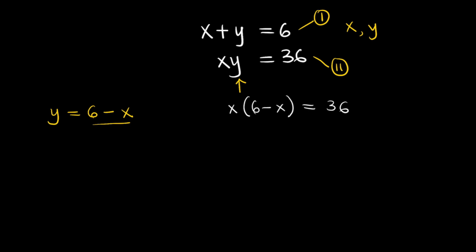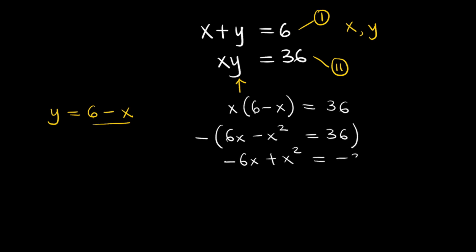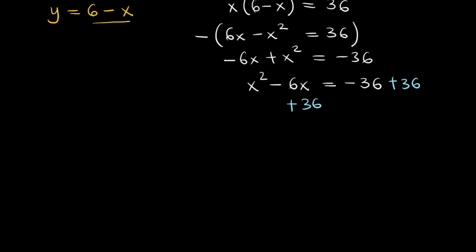I'll go ahead and open up this bracket. This is 6x minus x squared is equal to 36. If I multiply through by negative 1, this gives me negative 6x plus x squared is equal to negative 36. Rearranging the left hand side, I have x squared minus 6x is equal to negative 36. If I add positive 36 to both sides, the new equation becomes x squared minus 6x plus 36 is equal to zero.